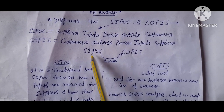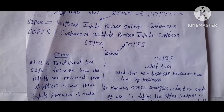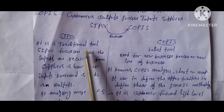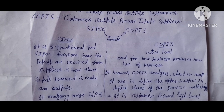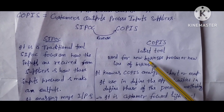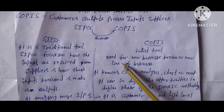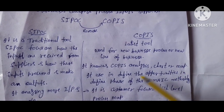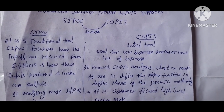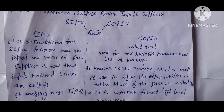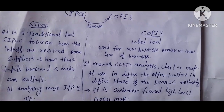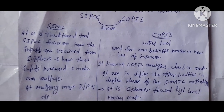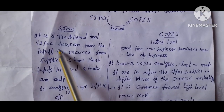SIPOC is a traditional tool, whereas COPIS is a more recent tool. COPIS is used for new business processes or lines of business to define where your strengths or weaknesses are, in order to improve your business processes.